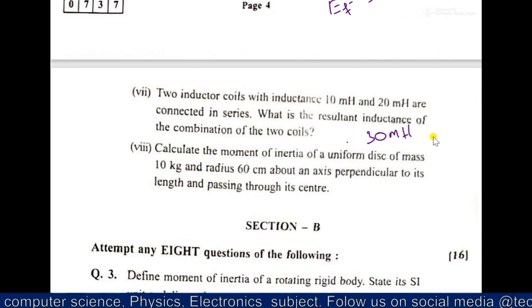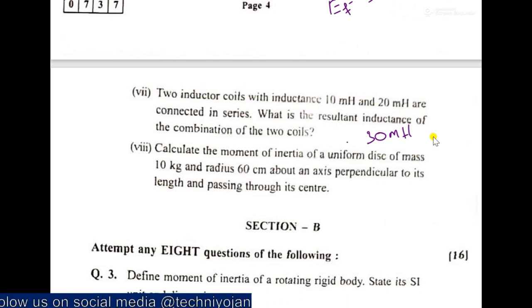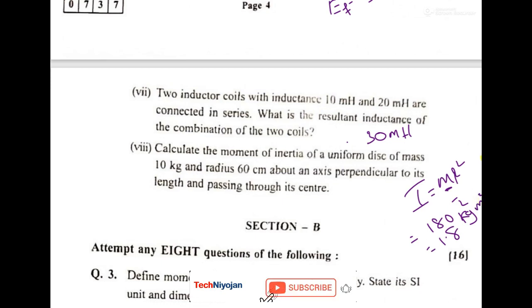Calculate the moment of inertia of this. You know that the formula is I is equal to MR square upon 2. So its answer when you calculate it will come as 180, if you convert it you will get this. So the unit will be, it's MR square, so M for this kg and R square, that is meter square, kg meter square.